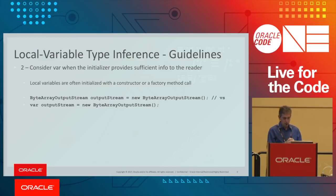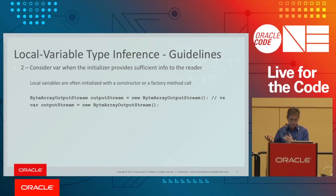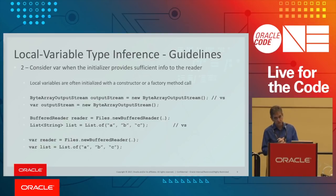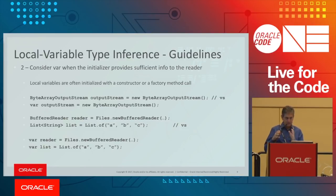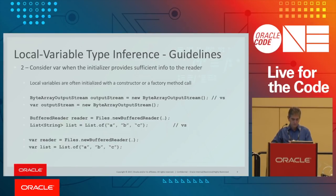Another guideline: consider var when the initializer provides sufficient information to the reader. We often initialize local variables with constructors or factory method calls. If I initialize an OutputStream with a constructor, the type is repeated on both sides — var avoids that redundancy. Same for factory method calls like a reader or a list. When initializing a list with string literals, it's clear it's a List of String, so var is a very good use case there.